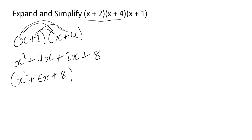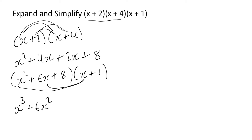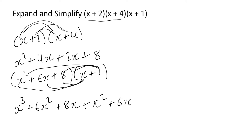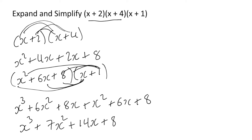Then bring in the third bracket and expand (x² plus 6x plus 8) by (x plus 1): x times x² is x³, x times 6x gives 6x², x times 8 gives 8x, 1 times x² is x², 1 times 6x gives 6x, 1 times 8 gives 8. Simplifying: x³ plus 7x² plus 14x plus 8. And that's our final answer.